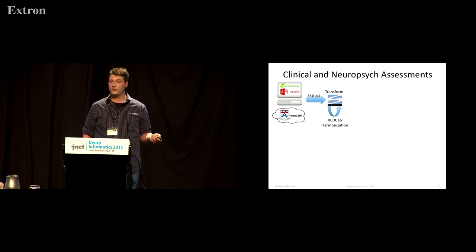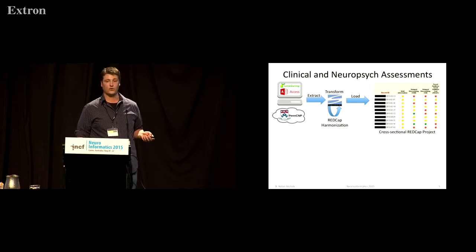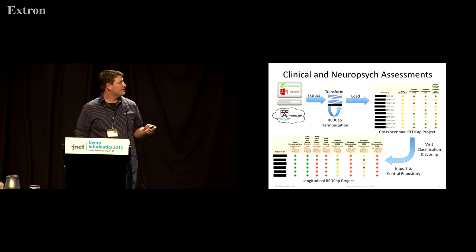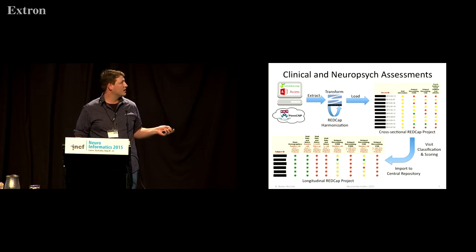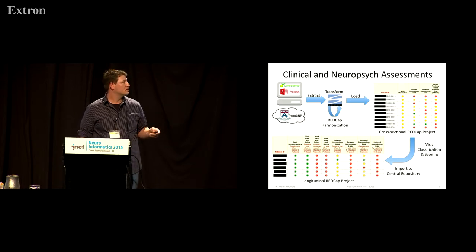At that point, we transform the data into a common data model and push it into REDCap, initially as a cross-sectional REDCap project placing all form-based data in its appropriate location. There's an additional step where data is automatically extracted and pulled into a longitudinal REDCap project, giving an integrated view across all sites and showing completion status for different instruments — green for complete, red for not complete, and yellow for incomplete but with some data present.